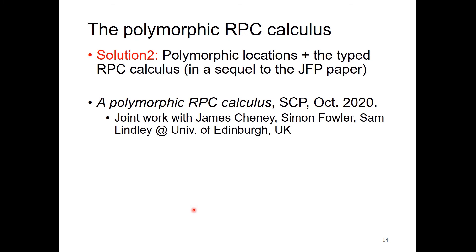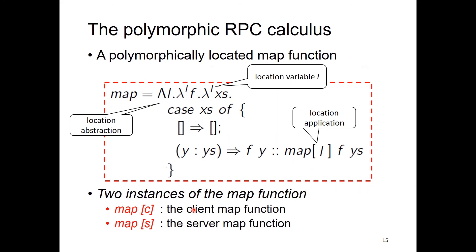A solution is to introduce polymorphic locations to the typed RPC calculus. This was proposed in a JFP paper about a polymorphic RPC calculus — joint work with James Cheney, Simon Fowler, and Sam Lindley. In the polymorphic RPC calculus, you can write a polymorphically located function with location abstraction over a location variable and location application, as shown in the slide. Then you have only to apply it to the client location to get a client map function, or apply it to the server location to get a server map function.